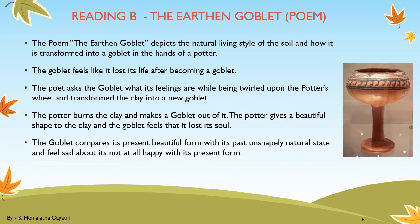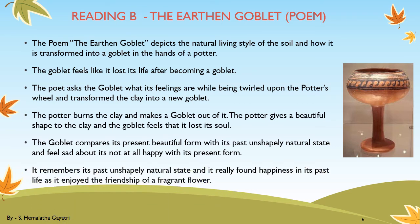The goblet compares its present beautiful form with its past unshapely natural state and feels sad about it — it is not at all happy with its present form. It remembers its past unshapely natural state and found happiness in that past life, as it enjoyed the friendship of a fragrant flower. We can understand that it gives a lot of importance to a lively form. The beauty of the poem is that the potter makes the goblet from clay and gives it a beautiful form, but the clay could give birth to a fragrant flower — a goblet cannot do so. The poet uses the soil and the goblet as examples to express that the beauty from a good deed is indeed greater than that obtained by mere form.